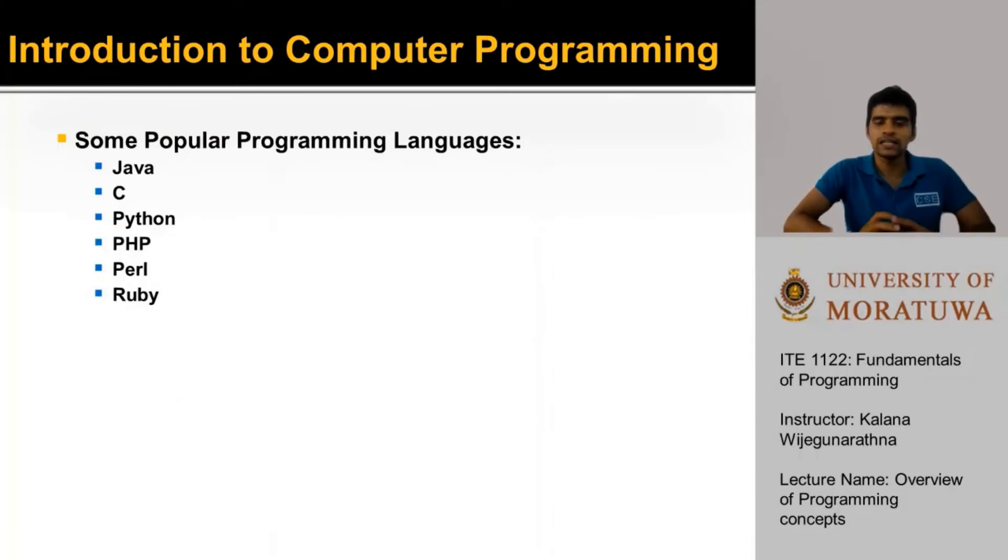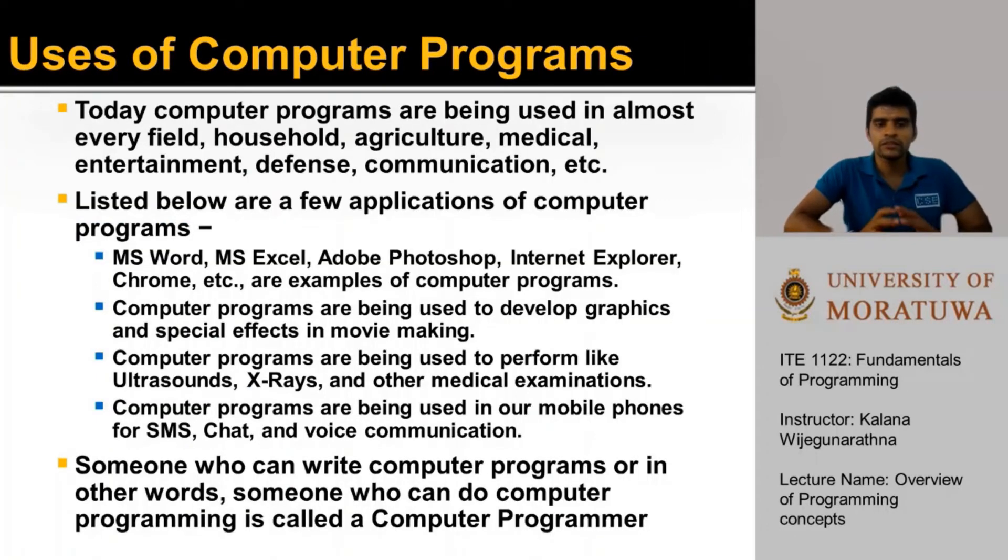Today, there are a large number of high-level programming languages used. Here are some of the most popular programming languages. Out of these languages, we will be looking at Java in this course. Java cleverly uses a compiler as well as an interpreter to convert the high-level source code that we write to machine code.